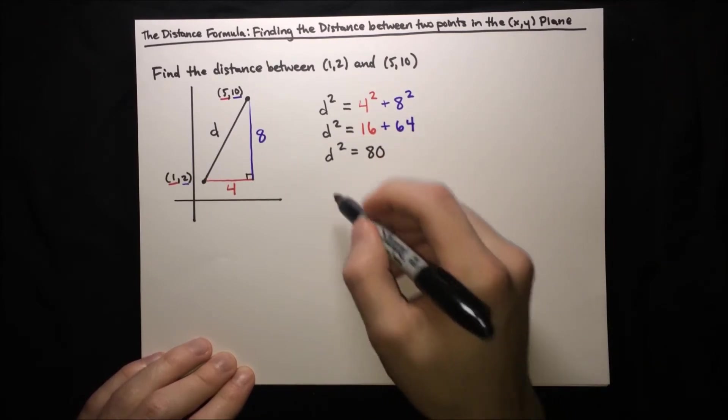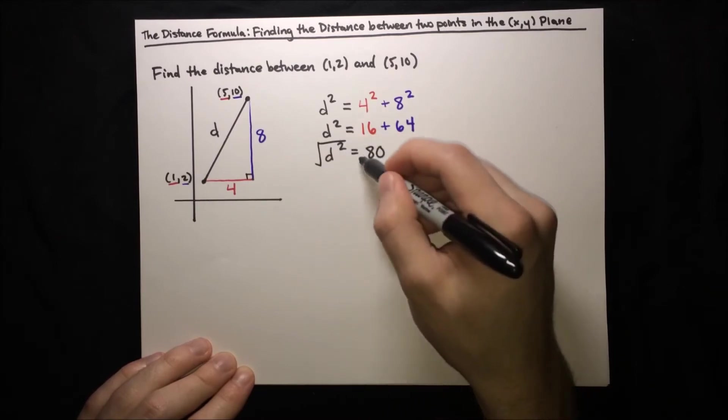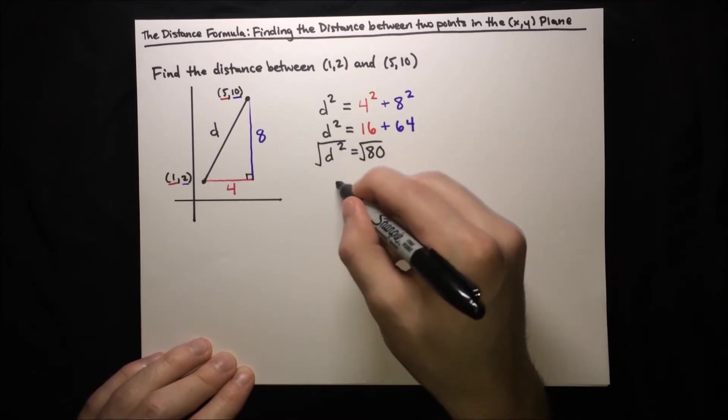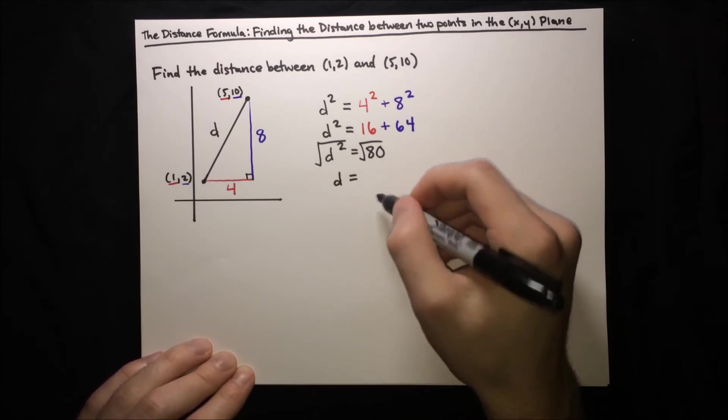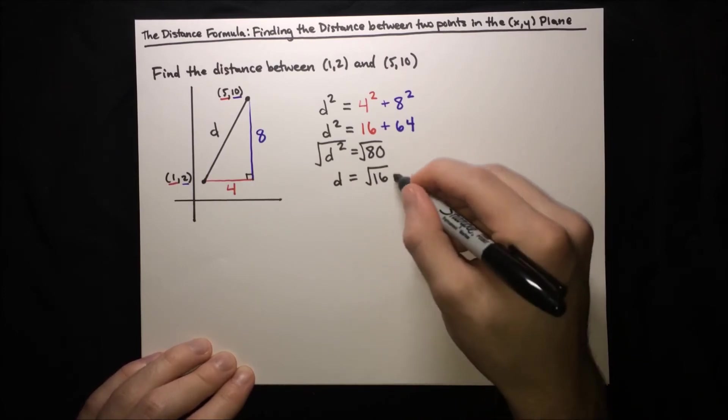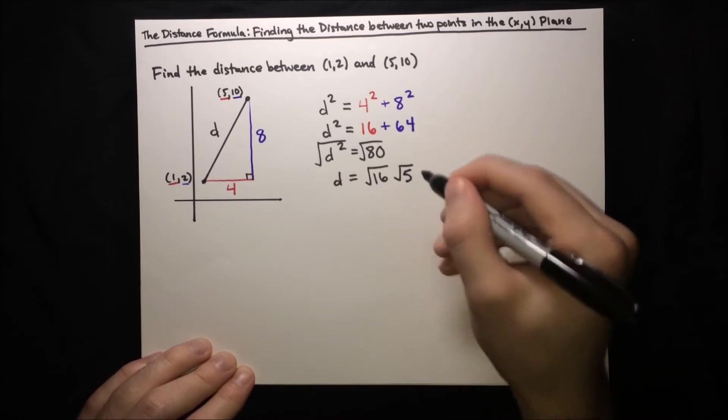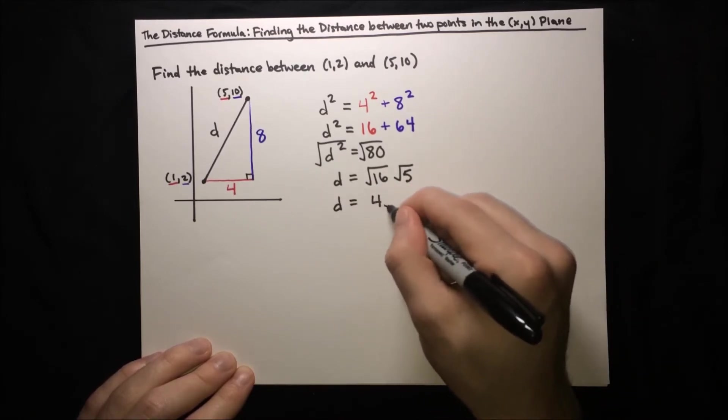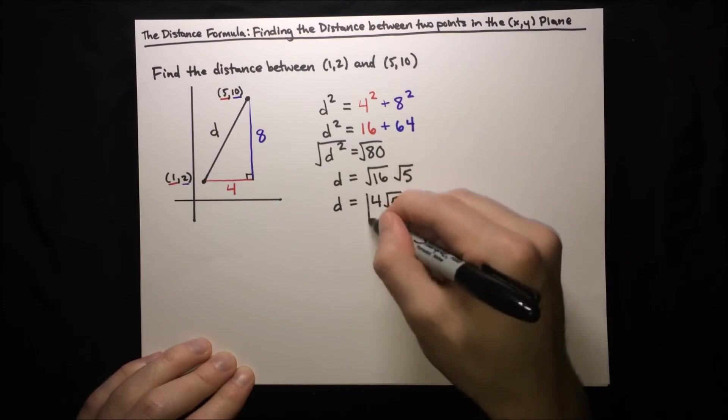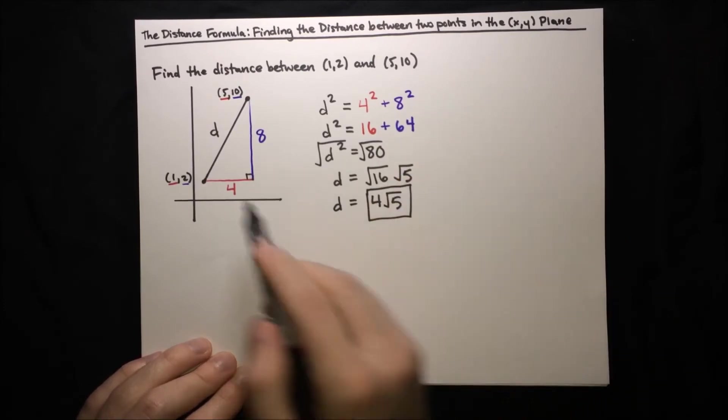And then to get rid of the square on the d, we can root both sides. And then we get d equals root 80, which we can break up into root 16 times root 5. So d equals 4 root 5. And that's it. That's the distance between the points.